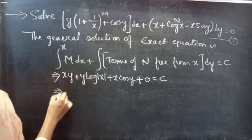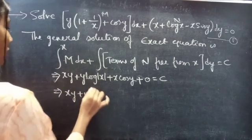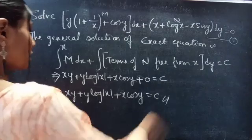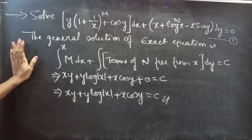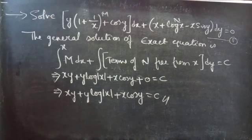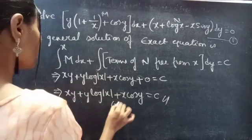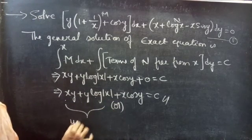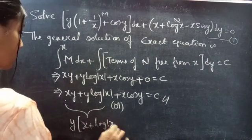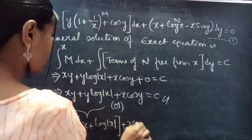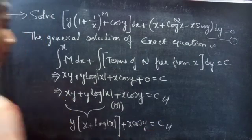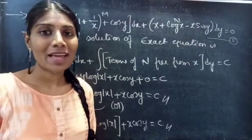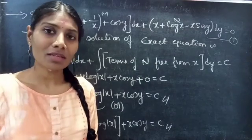Therefore, xy plus y log|x| plus x cos y equals to C is the required general solution to the given exact differential equation. Or, you can also write this by taking y common from the first two terms: y times (x plus log|x|) plus x cos y equals to C. So we have seen a problem from exact differential equations in this video. Hope you understand. We'll see you in the next video — bye-bye.